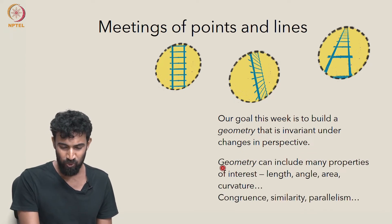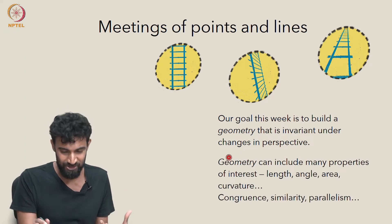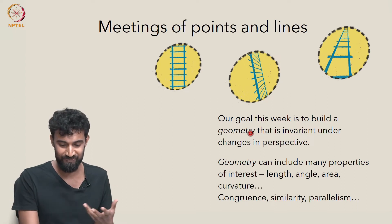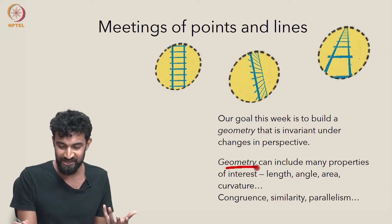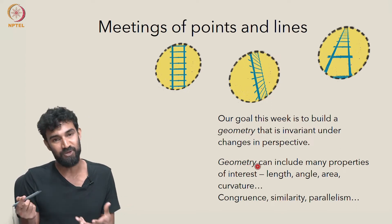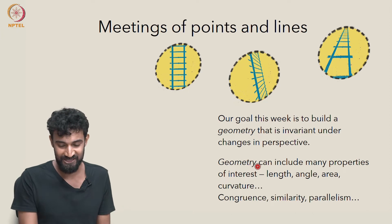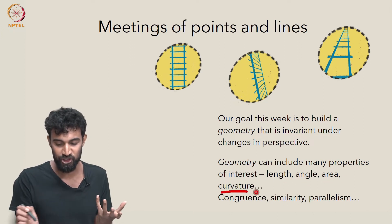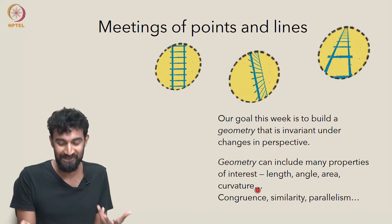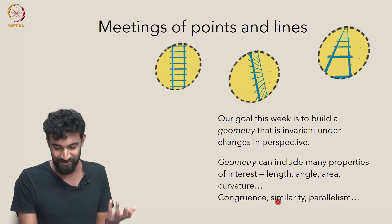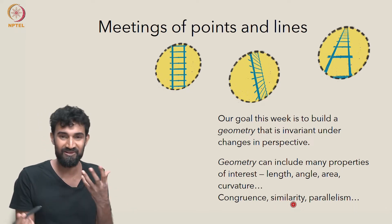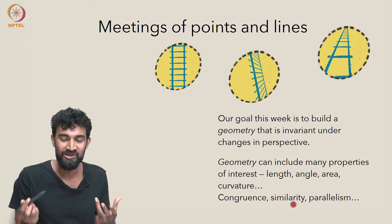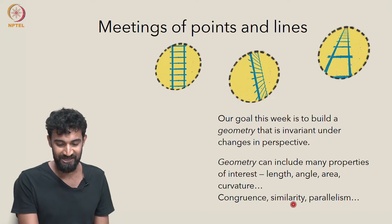Now, what is a geometry? What does it mean to build a geometry? Geometry can include many different properties of interest. It can include study of length, angle, area, curvature, congruence, parallelism, similarity. So these are all words and properties that you may have studied under the name geometry.